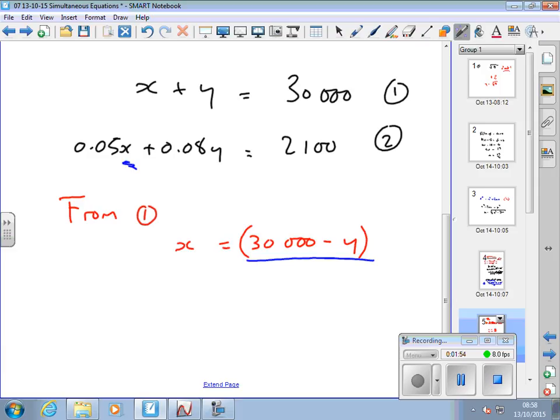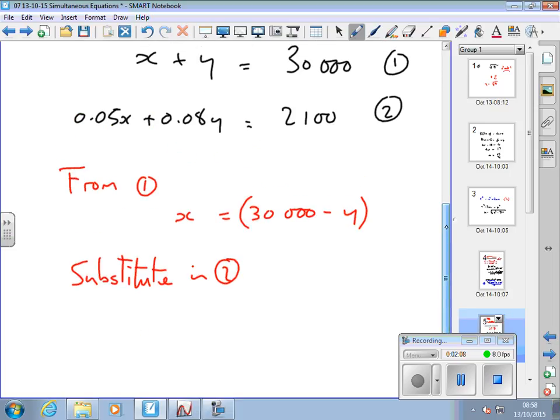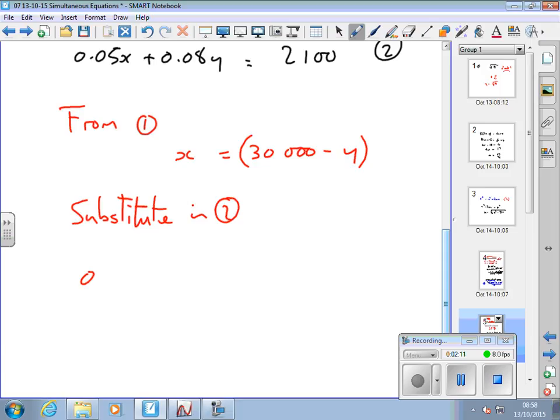So let's do that. Substitute in two. I'll substitute that expression into two. So I'll rewrite number two, but instead of X, I'm going to write that expression. 0.05X, which is now this expression, equals 2100. I left off the other bit, didn't I?